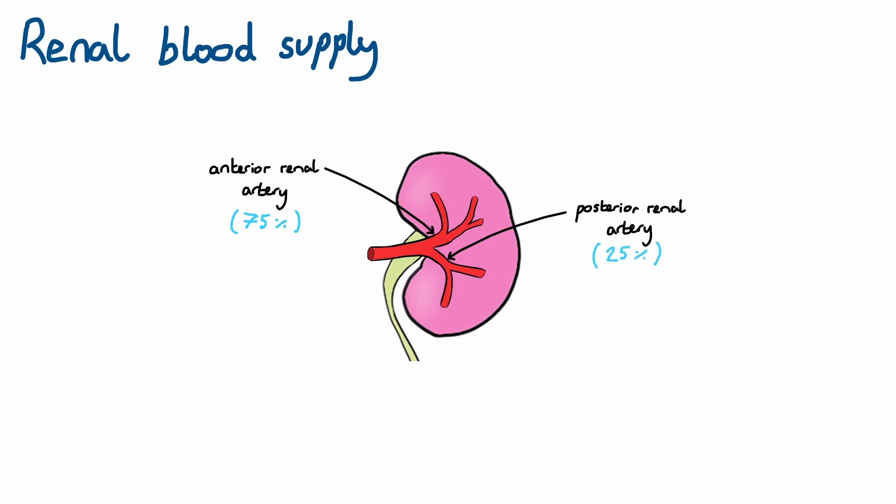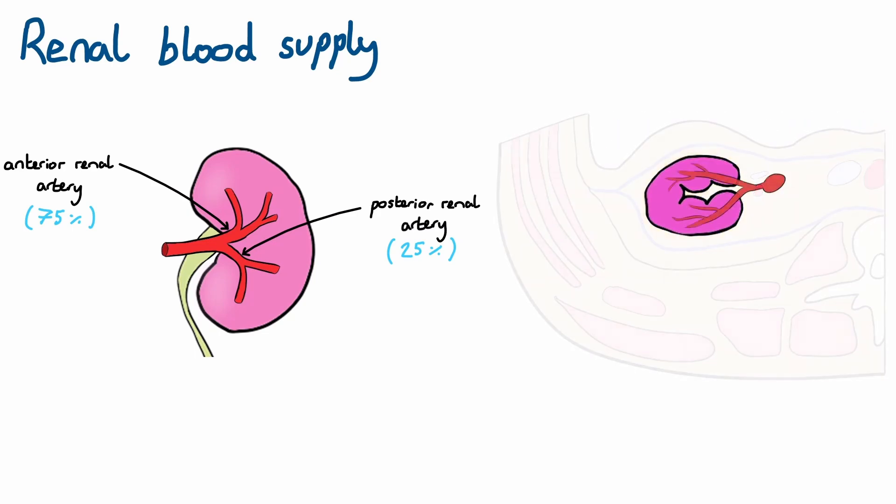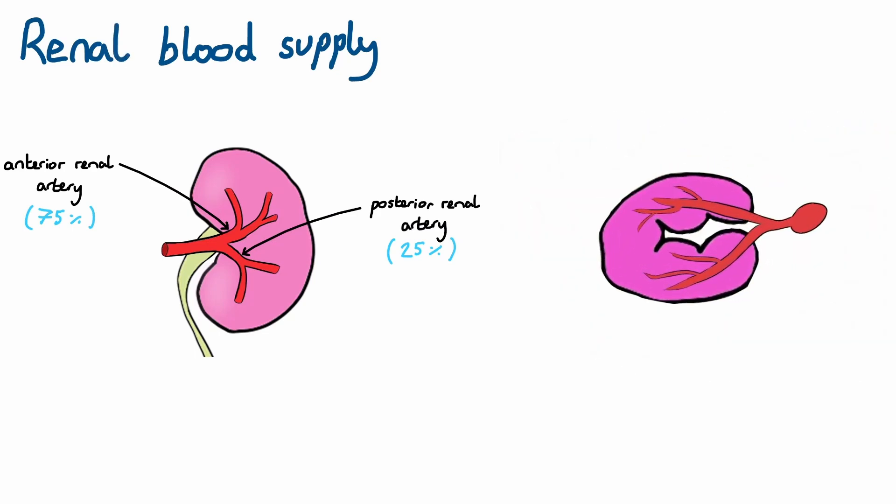There is an anatomical plane in the kidney, known as the avascular plane of Brodel, that lies between the anterior and posterior branches of the renal artery.